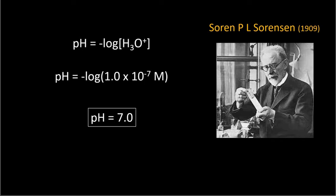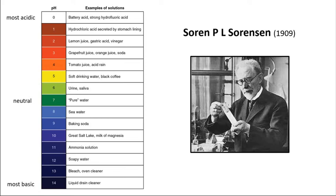Now, Soren Sorenson did not like having to calculate out the negative log of 1 times 10 to the negative 7. And he didn't even have a calculator, and you don't like doing it with a calculator. So, that 7 is a number that you need to remember, because Mr. Sorenson came up with something that you are familiar with, because he did not like having to do all of this. And that is the pH scale.